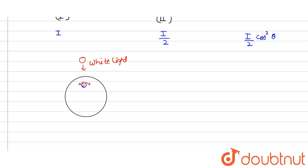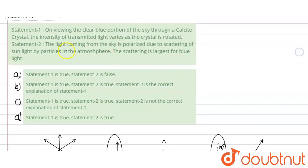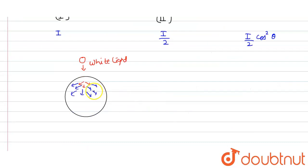there would be scattering. Which light is scattered the most? It is the blue light which is scattered the most. Now, if blue light is scattered the most, we will be viewing it as blue. So we can say that our second statement, that the light coming from the sky is polarized by scattering of sunlight by particles in the atmosphere and it is largest for blue light, is true.